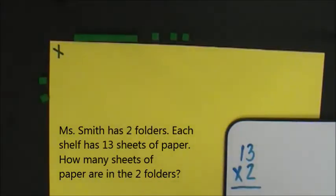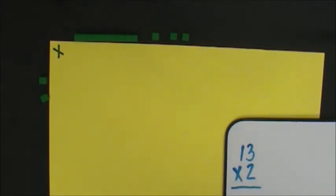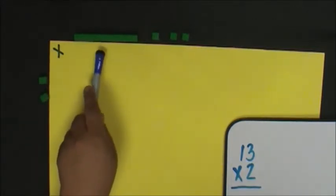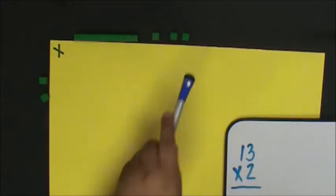Let's represent the problem with an area model. The value of the folders is 2, that is 2 ones. Here's 1 one, 2 ones. The value of the sheets of paper is 13, 1 ten, and 3 ones.